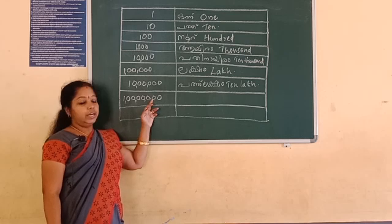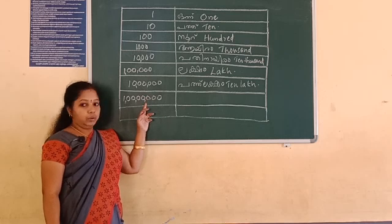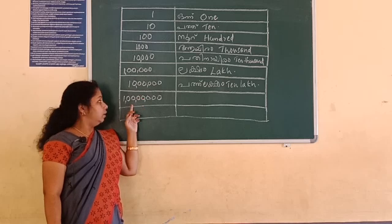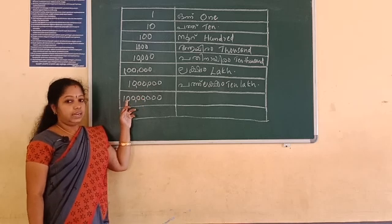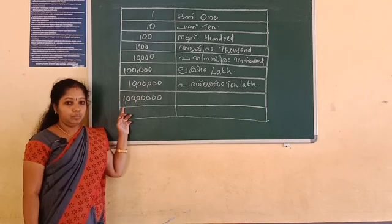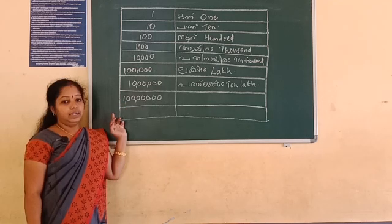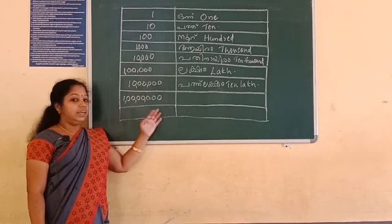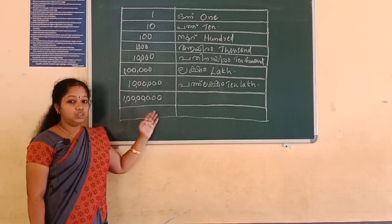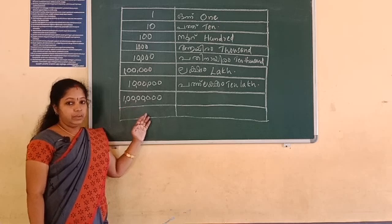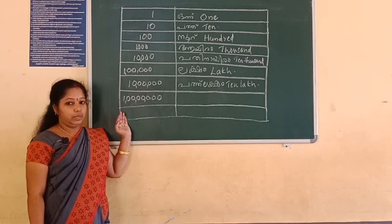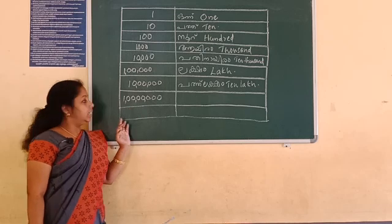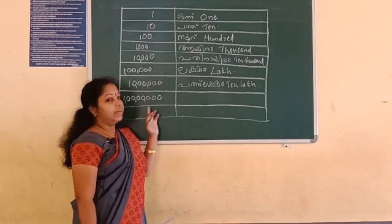Ten. Ten, hundred. This is the formula. 1000, 10,000. Then a formula. 10,000. Then a formula. This is the formula. We can read it very easily. Okay? We can be very easy to read. So, according to the formula, we can see the formula. So, this is the formula.